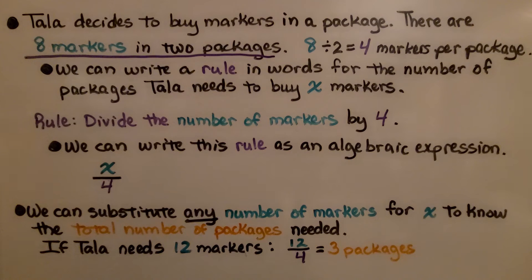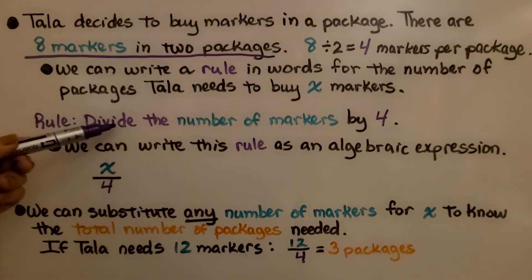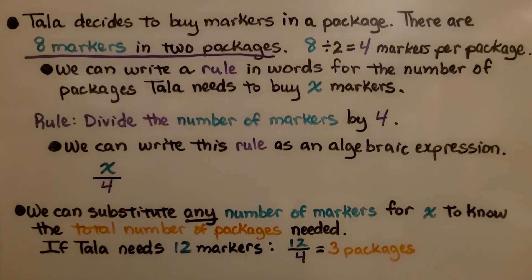We can write a rule in words for the number of packages. Tala needs to buy x markers, some unknown number x. The rule would be divide the number of markers by 4. That would tell us how many packages. We can write this rule as an algebraic expression. Some number x of markers divided by 4 would tell us the number of packages.